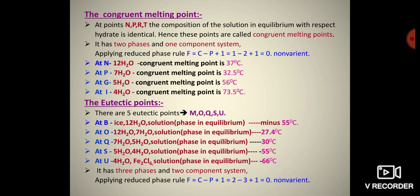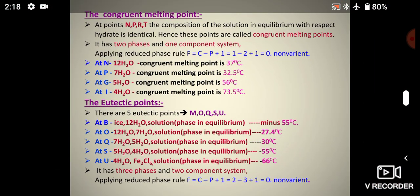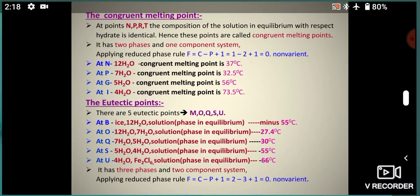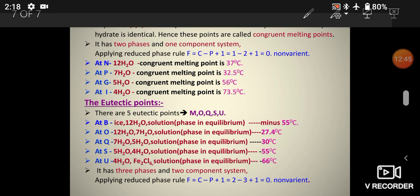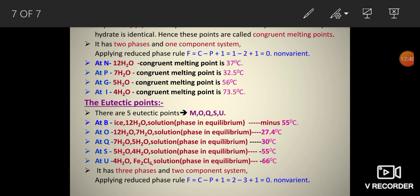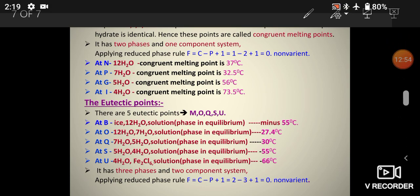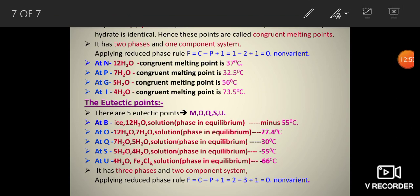At S, the phases are Fe₂Cl₆·5H₂O, Fe₂Cl₆·4H₂O, and solution, with an eutectic temperature of 55°C. At U, the phases are Fe₂Cl₆·4H₂O, anhydrous Fe₂Cl₆, and solution, with an eutectic temperature of 66°C. Each eutectic point has three phases and two components. Applying reduced phase rule: F = C − P + 1 = 2 − 3 + 1 = 0. Hence, these are non-variant.